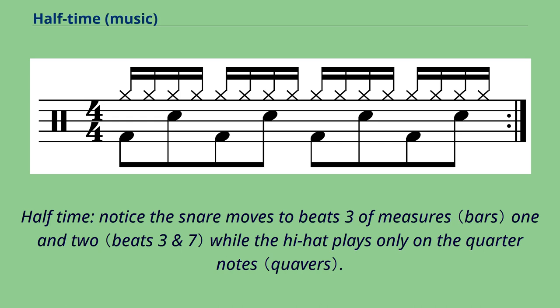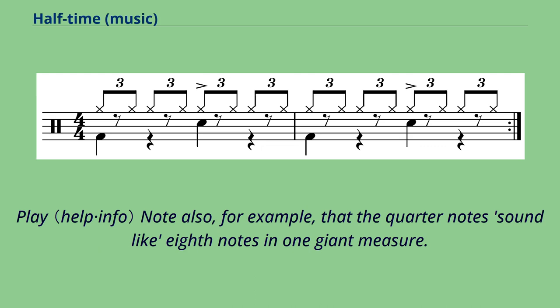Halftime: notice the snare moves to beat 3 of measures 1 and 2, while the hi-hat plays only on the quarter notes. Note also, for example, that the quarter notes sound like eighth notes in one giant measure.